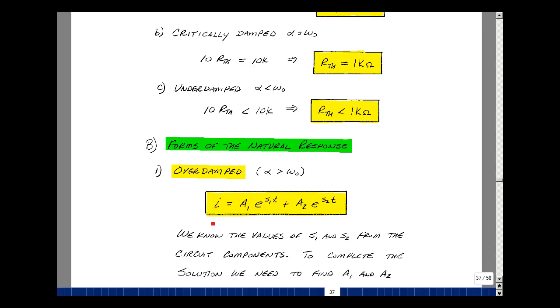The formula solution for I of t is a1 times e to the s1t plus a2 e to the s2t. The values of s1 and s2 you can find on page 35, and they depend on R, L, and C. What we need to do now is figure out the values of a1 and a2.